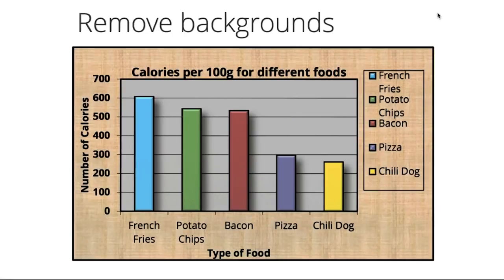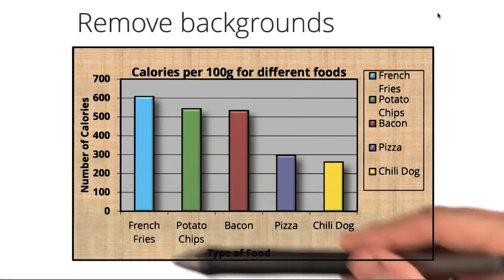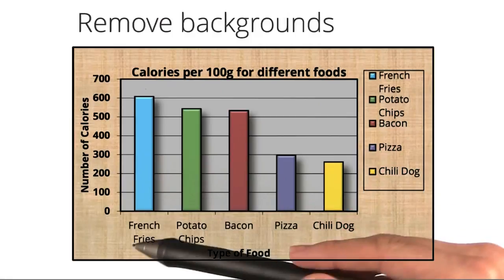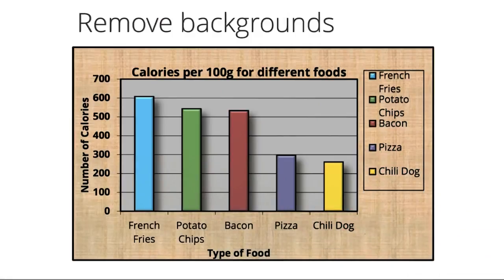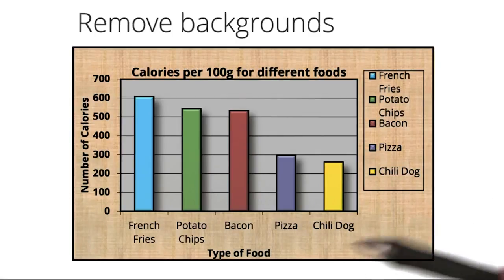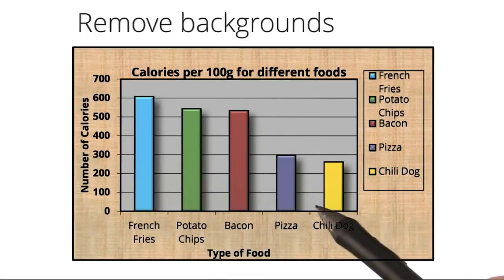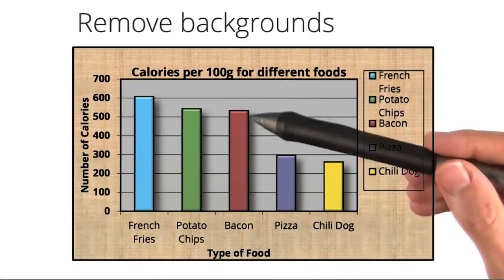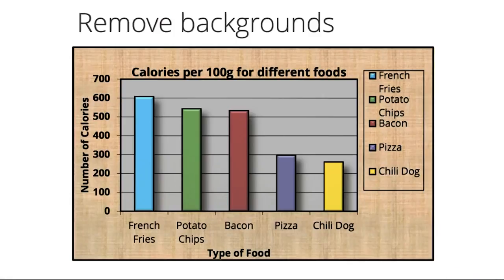Here, we have a bar chart showing the number of calories for various types of foods. At first glance, we can see examples of bad visualization techniques that we've discussed previously, such as this busy background, poor color choices, and the use of 3D shadowing and gradients.